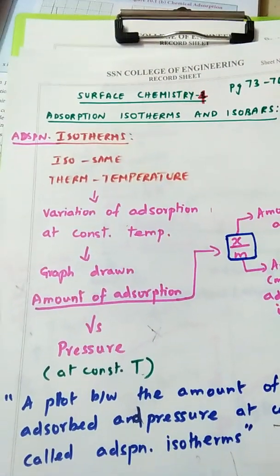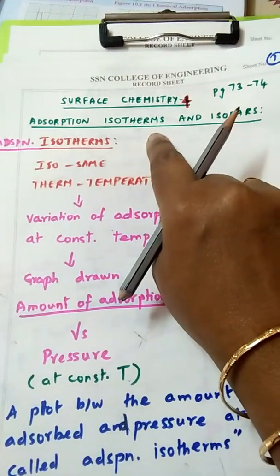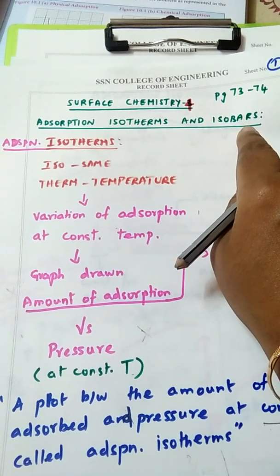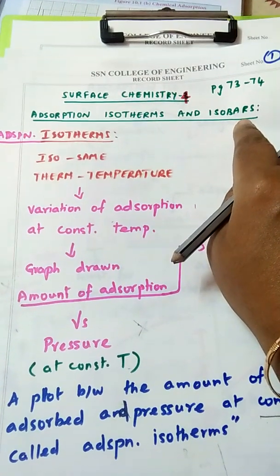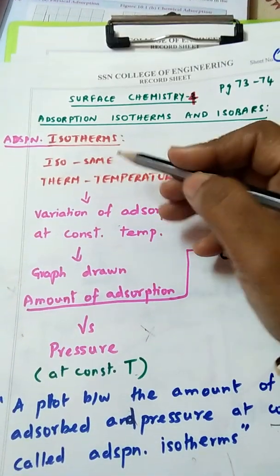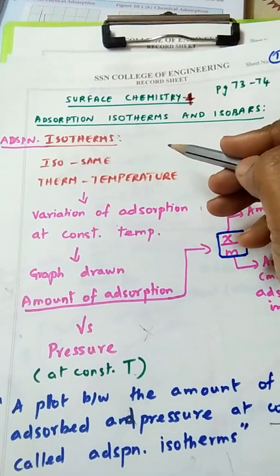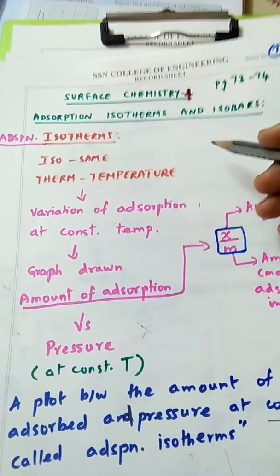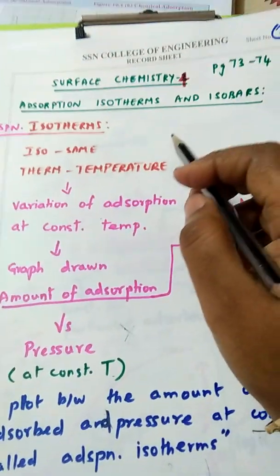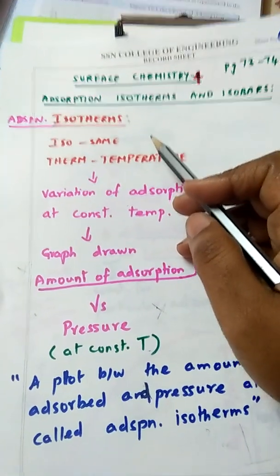Hi students, in this video we are going to discuss about adsorption isotherms and isobars. As I told you earlier, while discussing about factors affecting adsorption, we are going to discuss about how adsorption varies with temperature and pressure in the form of graphical representation. This portion is on page number 73-74 in your second volume book.